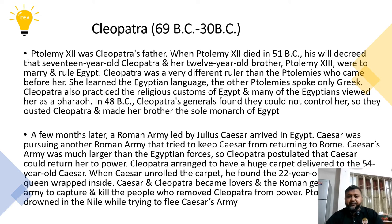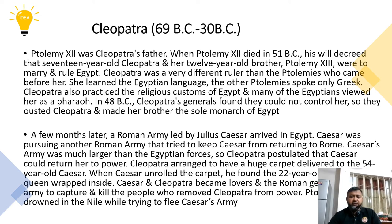Cleopatra arranged to have a huge carpet delivered to the 54-year-old Caesar. When Caesar unrolled the carpet, he found a 22-year-old young girl — it was Cleopatra, who was wrapped inside the red carpet. Cleopatra and Caesar became lovers, and the Roman general stayed in Egypt with Cleopatra. His army captured and killed those who were becoming obstacles for Cleopatra, and they made Cleopatra the ruler of Egypt.